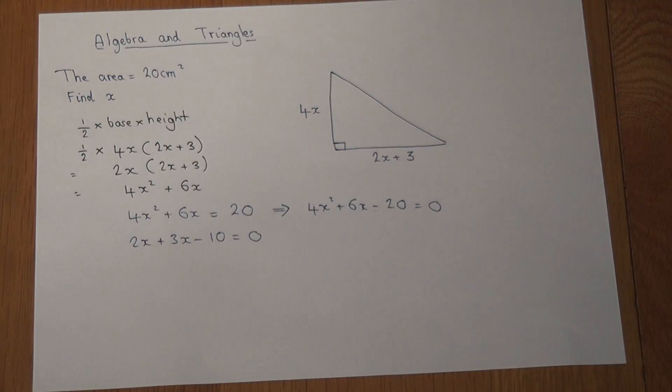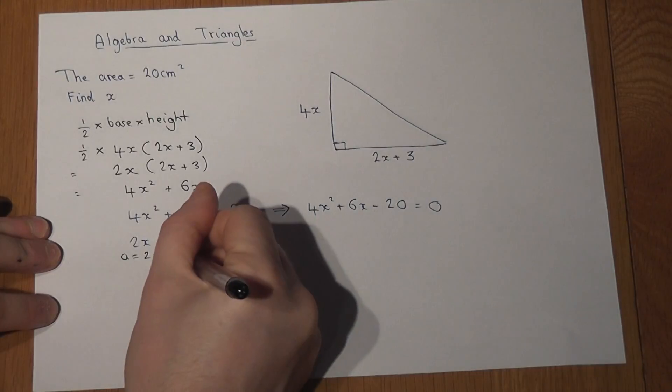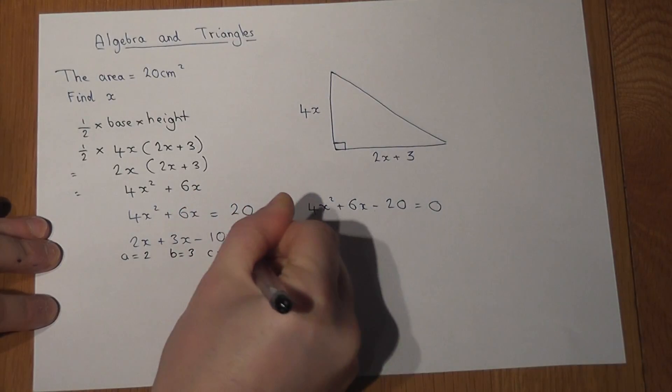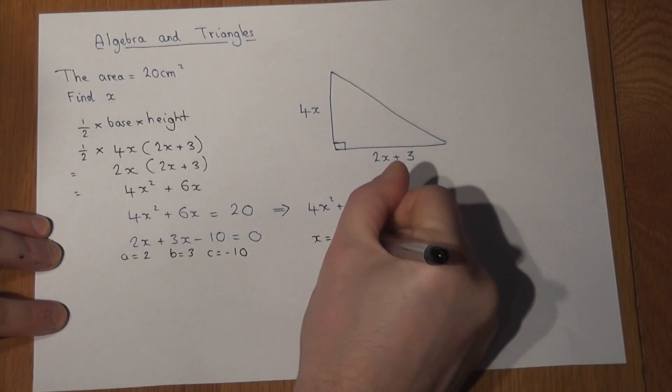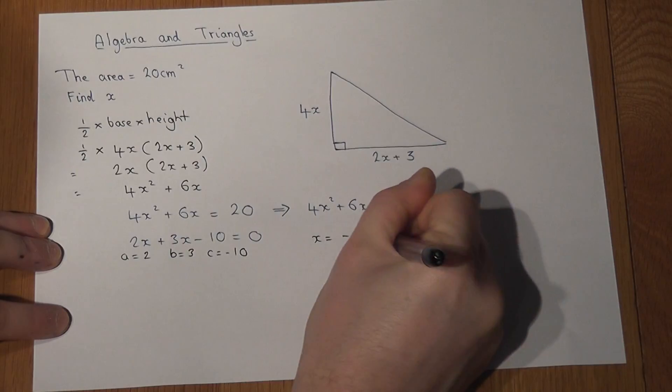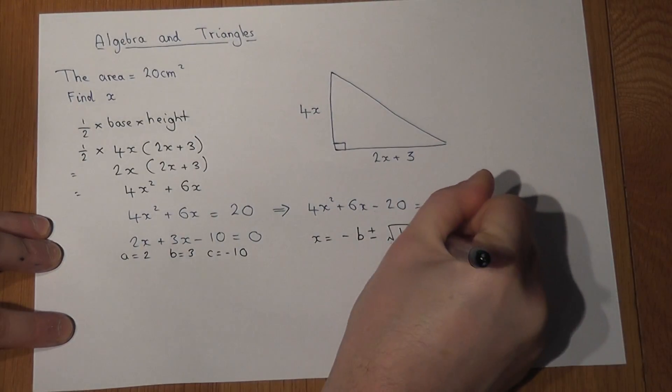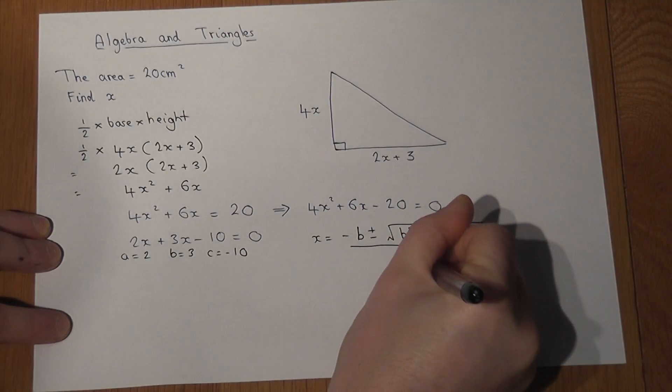Now to solve this, I can use the formula. I've got a equal to 2, b equal to 3, c equal to minus 10. And the formula is x equals minus b plus or minus the square root of b squared minus 4ac, all over 2 lots of a.